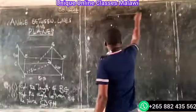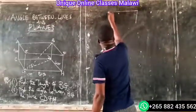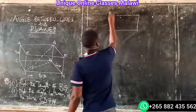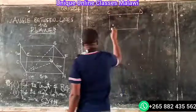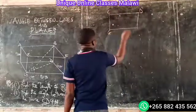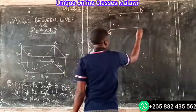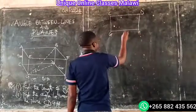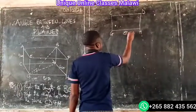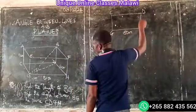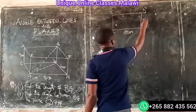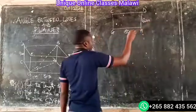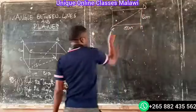Looking at this one, we have to select C, D, G, and H. The value of GD is 8 centimeters and 6 centimeters. Then we have to select GD.